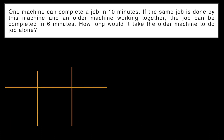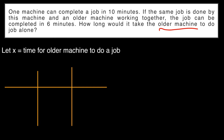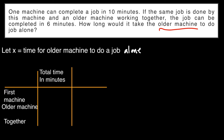Let's have this example. One machine can complete a job in 10 minutes. If the same job is done by this machine and an older machine working together, the job can be completed in 6 minutes. How long would it take the older machine to do the job alone? We are tasked to solve for the time in minutes for the older machine to do the job alone. The total time for the first machine is 10 minutes, for the older machine is x, and when they work together they finish in 6 minutes.